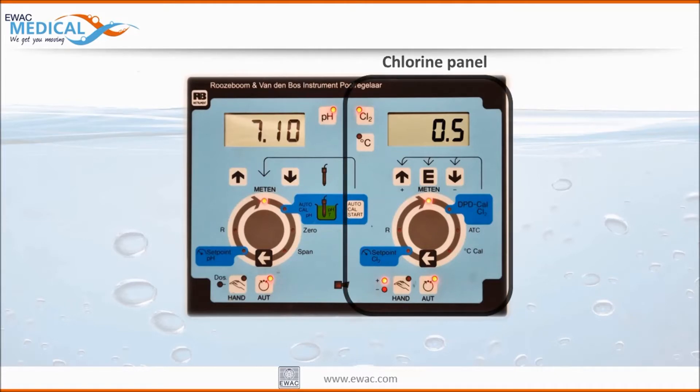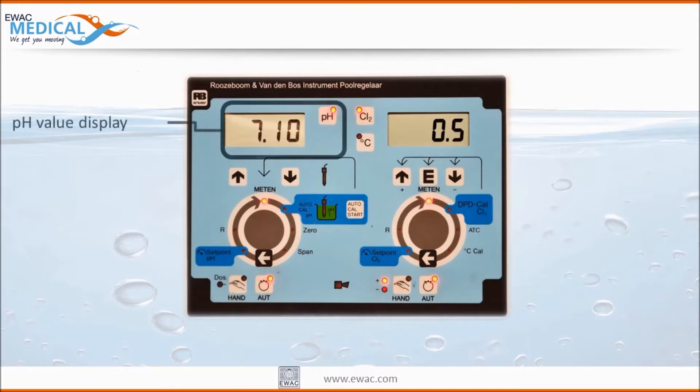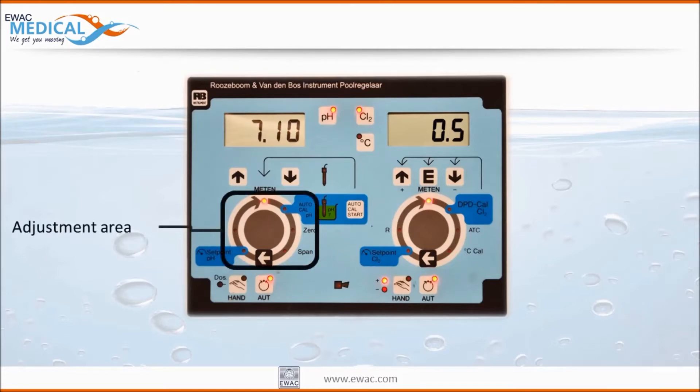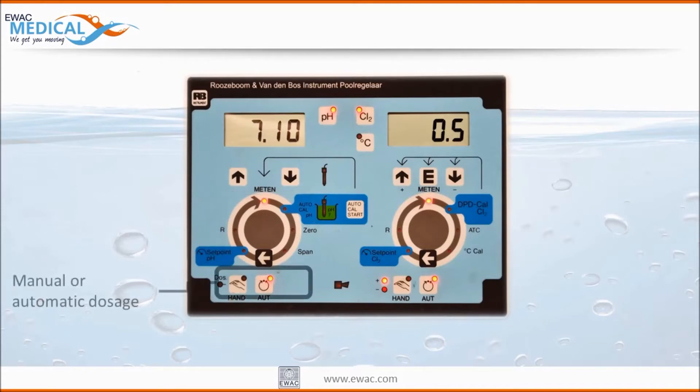On the left side we see a pH value display which is currently displaying a measured value of 7.1. The two arrow keys below can be used to adjust the set point. The adjustment area is used to change the settings and calibrate the unit. The two keys below the adjustment area can be used to switch between automatic and manual pH dosing.